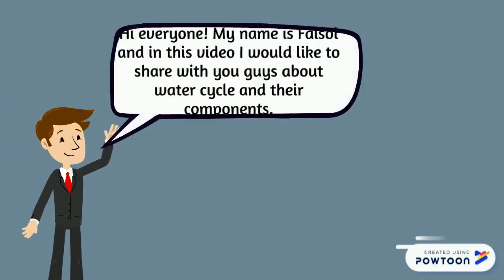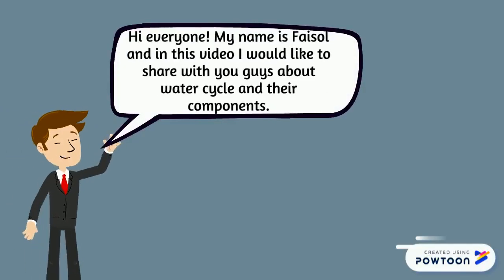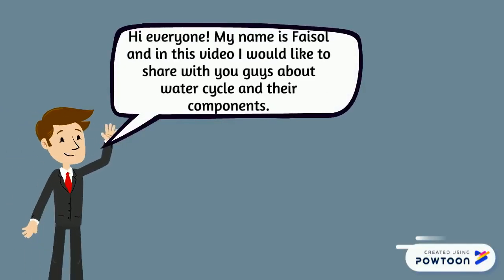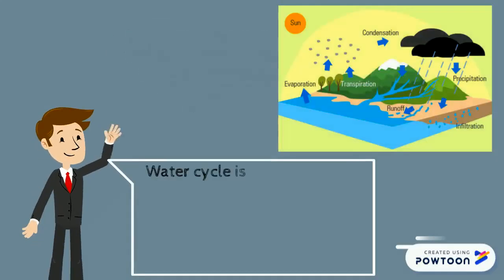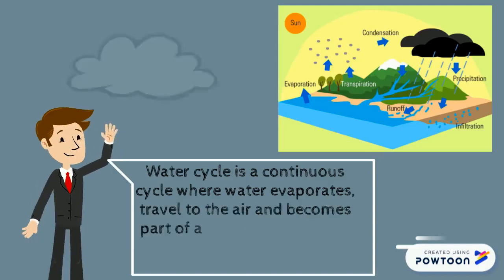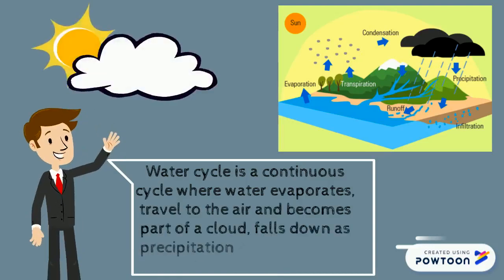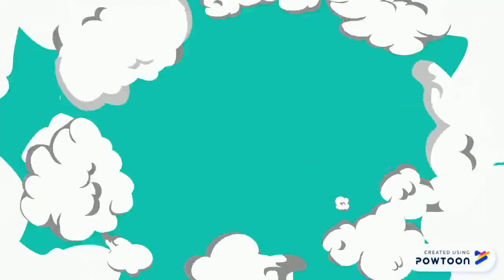Hi everyone, my name is Faisal and in this video, I would like to share with you about the water cycle and its components. The water cycle is a continuous cycle where water evaporates, travels to the air and becomes part of a cloud, falls down as precipitation, and evaporates again.